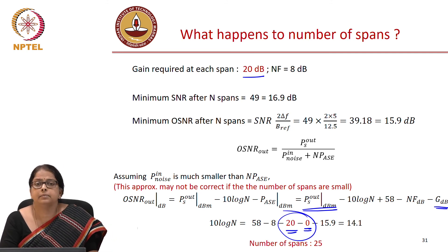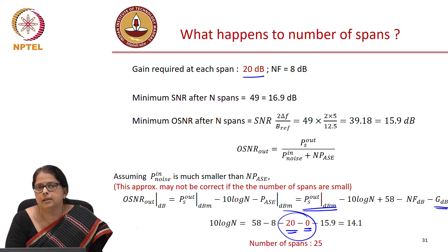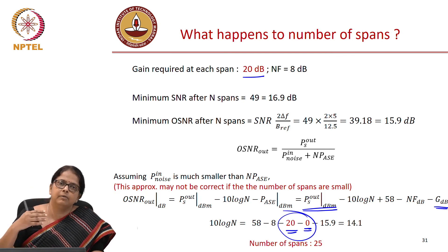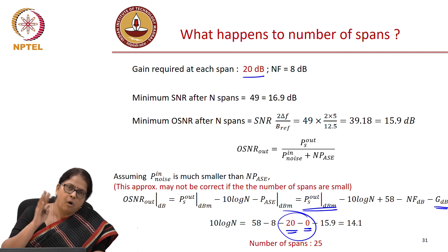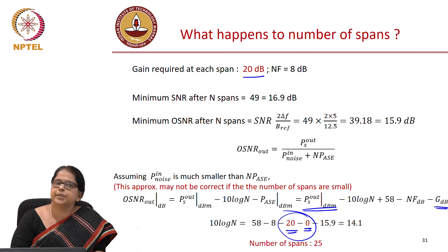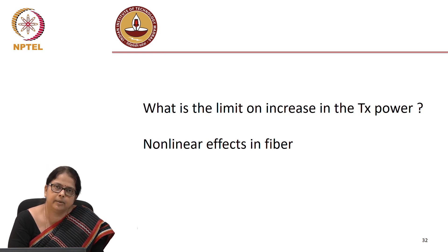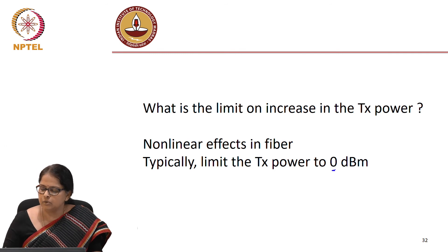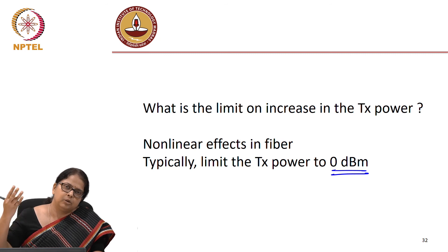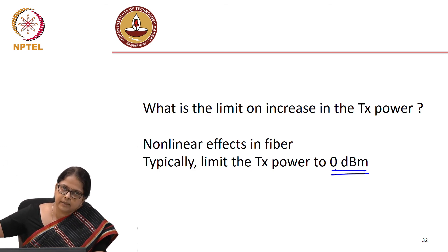What limits us from increasing span length further beyond 64 km? If we want 100 km, either we change our DCF or we increase the transmit power further — going to 0 dBm, 10 dBm, etc. But what is the limit on transmit power? The limit is non-linearity in the fibre. This is a topic for the next module. At the end of the day, the total transmit power is limited to around 0–10 dBm in single-mode fibre. The rule of thumb is to limit transmit power to 0 dBm to avoid non-linear effects and avoid creating more complications in the system.